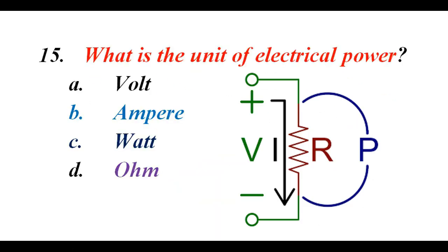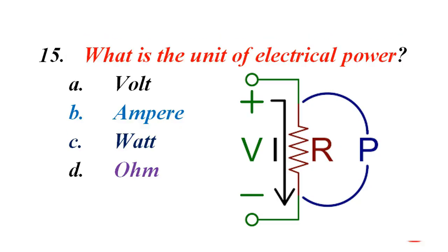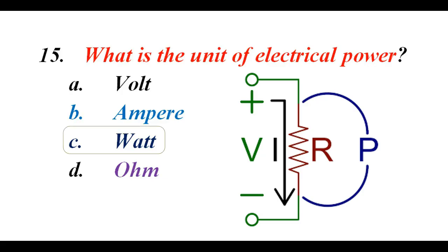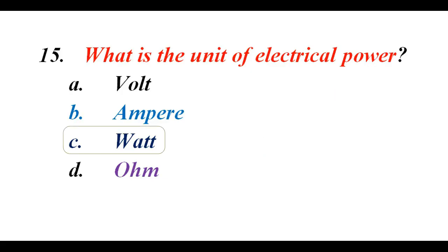What is the SI unit of electrical power? A. Volt. B. Ampere. C. Watt. D. Ohm. The correct answer is C. Watt.